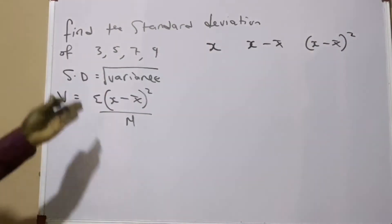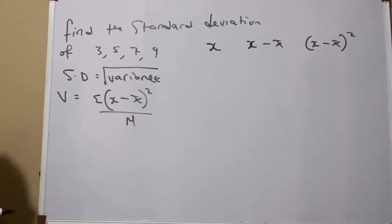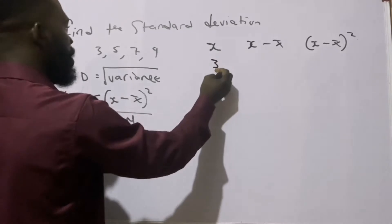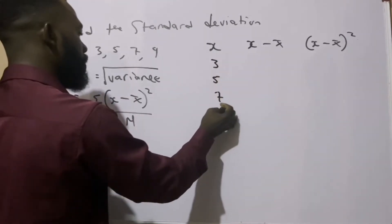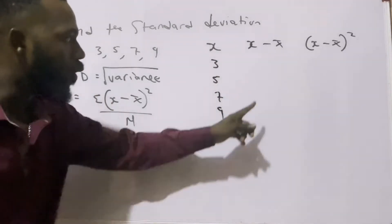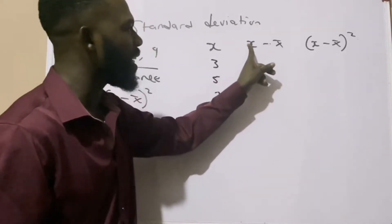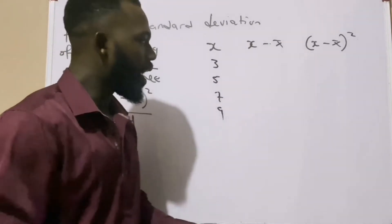Now let us input this into the table. Our x actually represents the set of data given, which is 3, 5, 7, and 9. Now for us to be able to get this column, I need to first solve for mean because it means x minus mean.